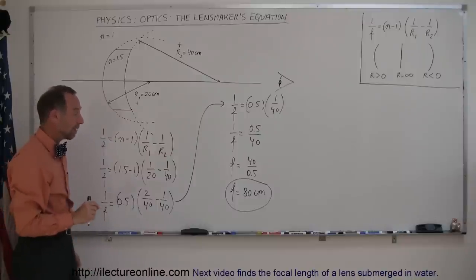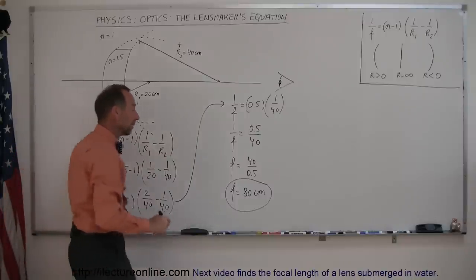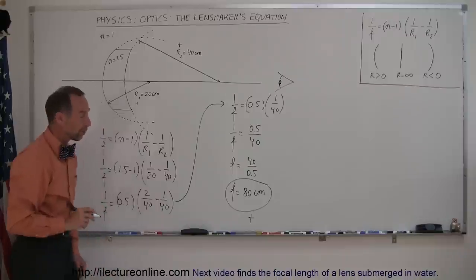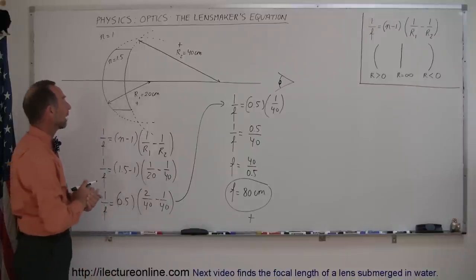So in this case, we have an 80 centimeter lens, or it is a positive 80 centimeters, and of course whenever a lens has a positive focal length, it is a converging lens.